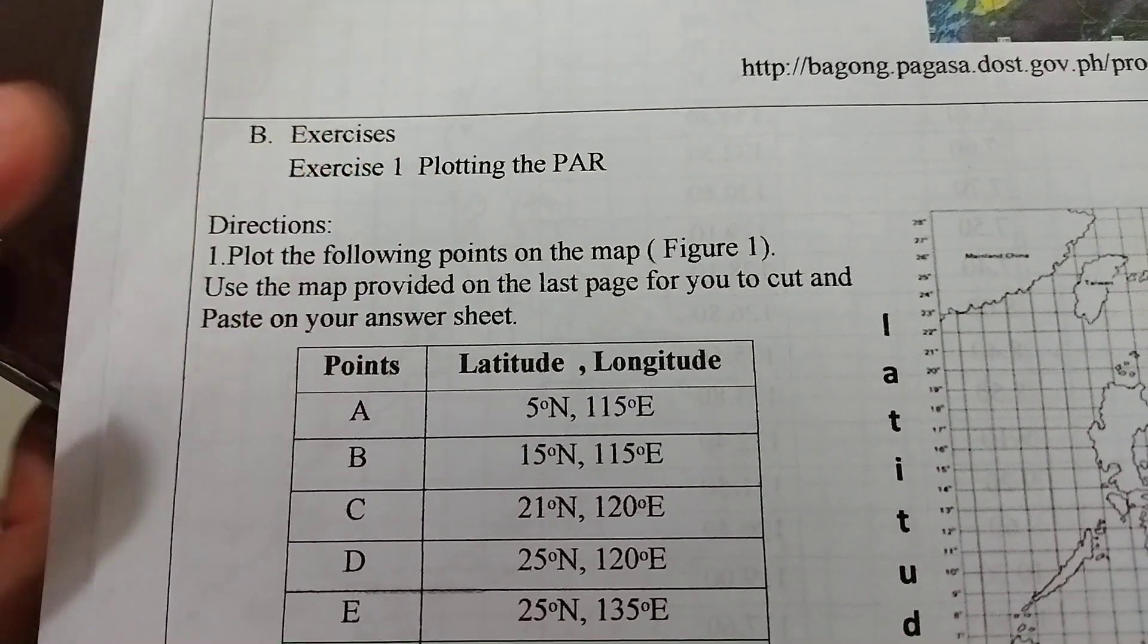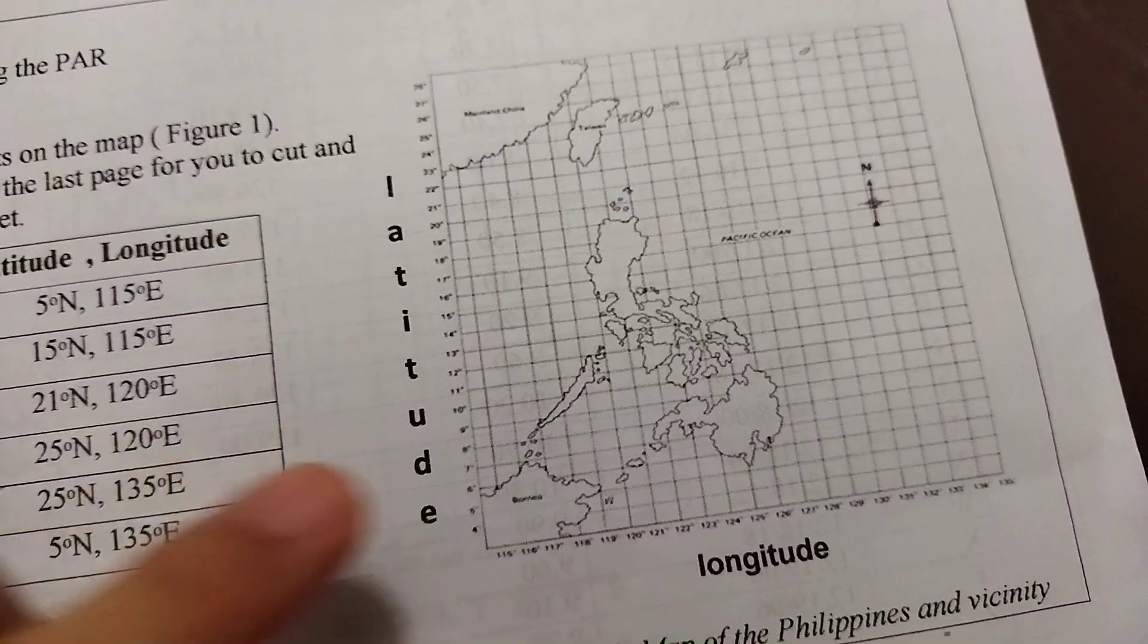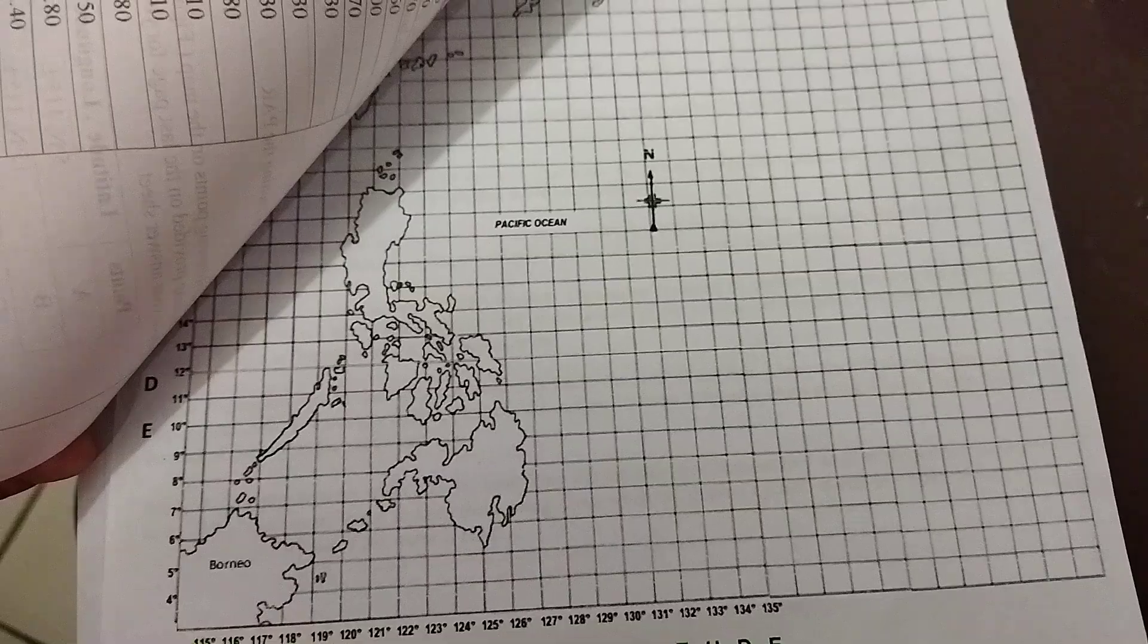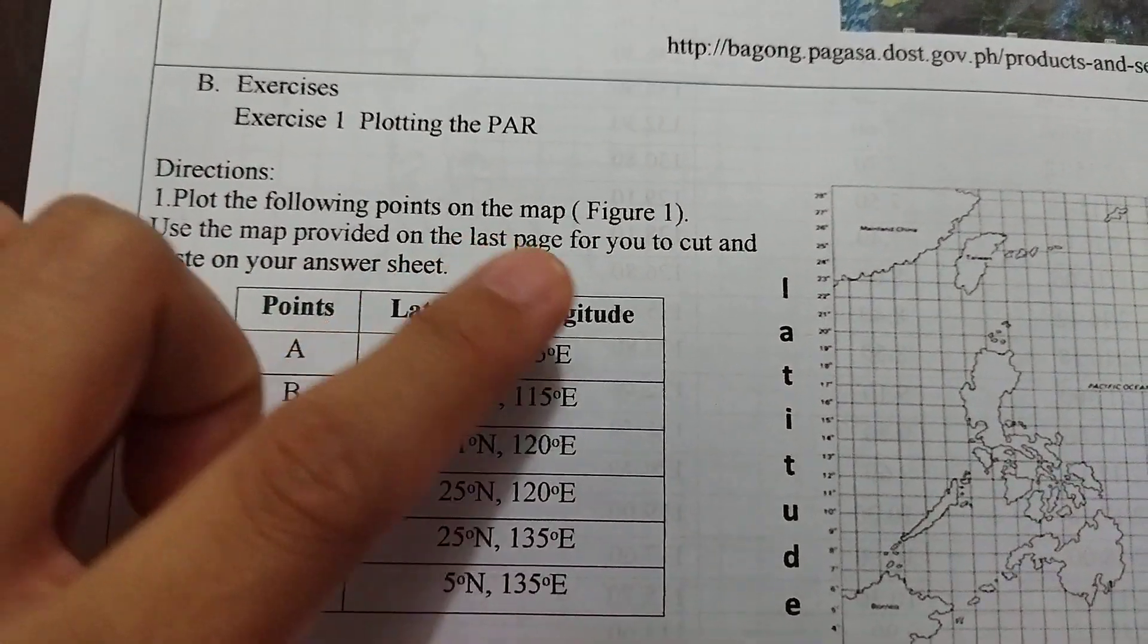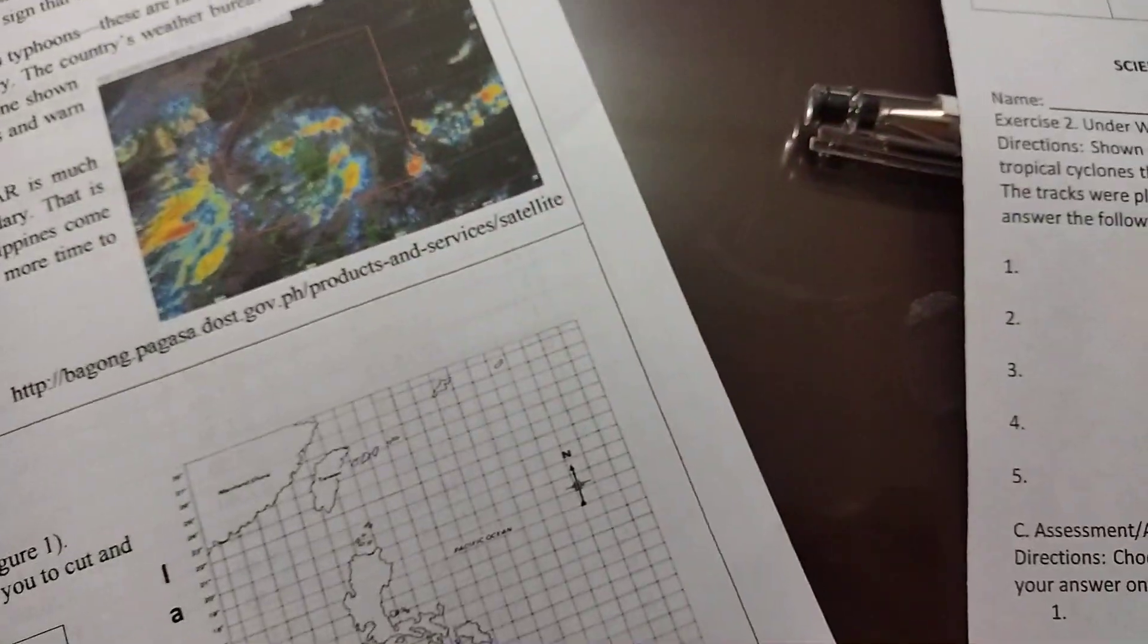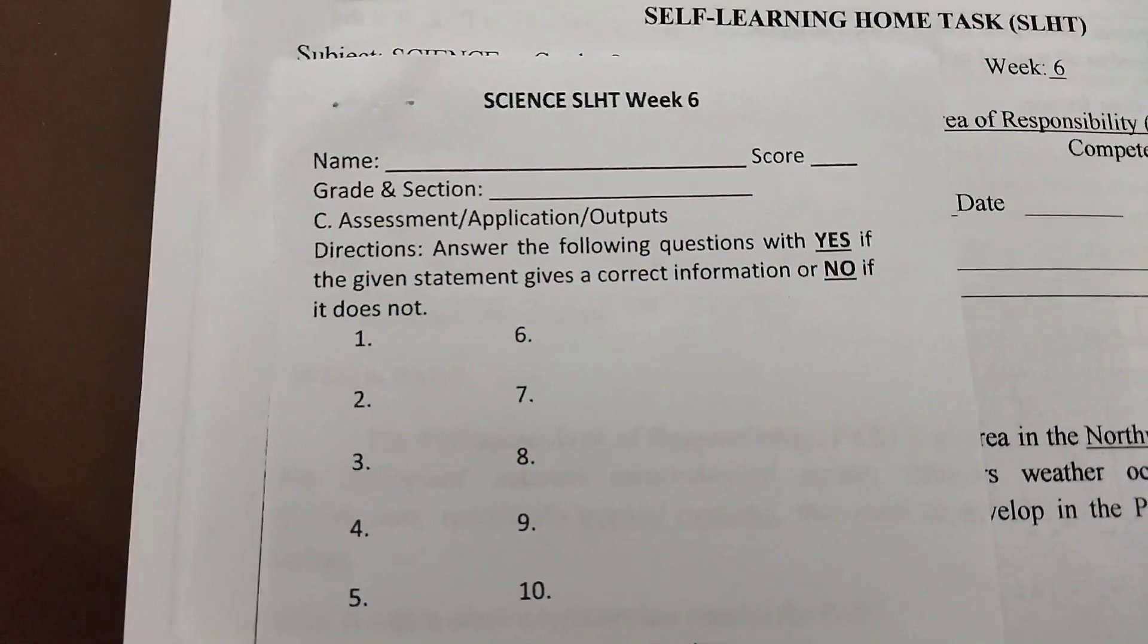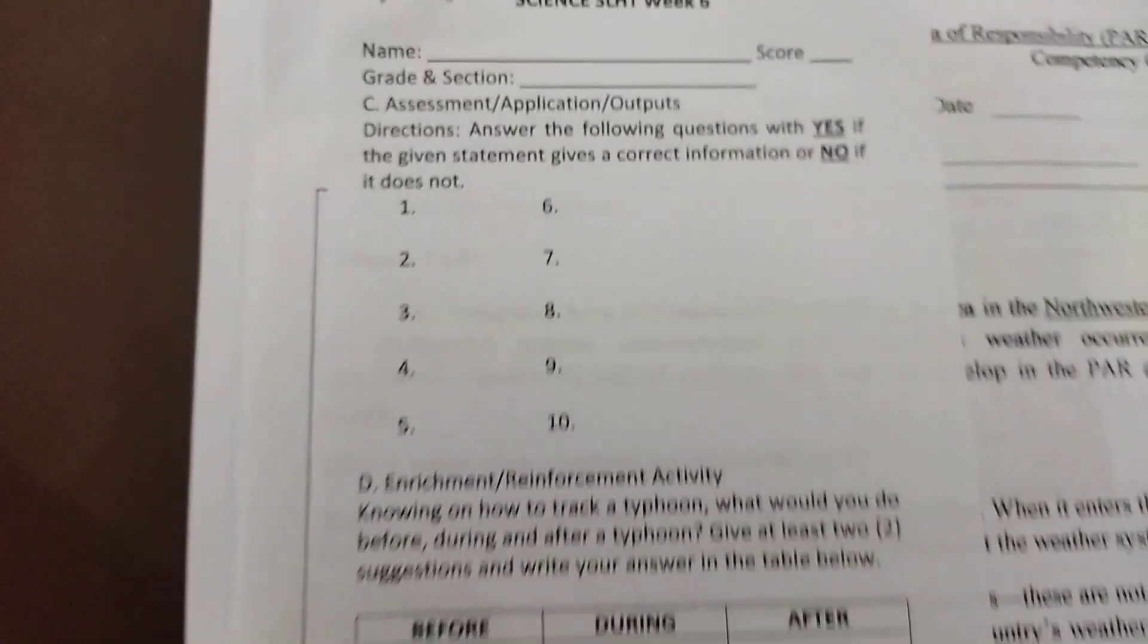Plotting the PAR. The direction says plot the following points on the map, but this is too small. So we are going to use the bigger map at the back. Use the map provided on the last page for you to cut and paste or staple in your answer sheet. The answer sheet in Science looks like this. So this is our answer sheet for SLHT number 6.